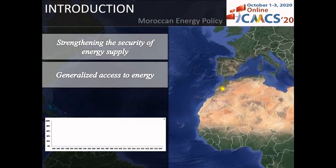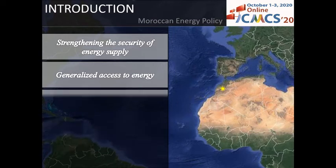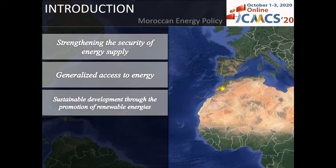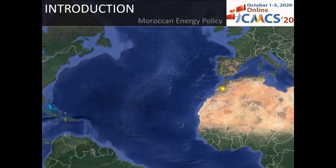The graph below shows the great achievement in rural electrification, with a percentage of 99.72% by the year 2019. Sustainable development through the promotion of renewable energies strengthens the competitiveness of the country's productive sectors, and preserves the environment through clean energy technologies, limiting greenhouse gas emissions and reducing pressure on forest cover. Noor and Midelt are two projects that illustrate the promotion of renewable energies.